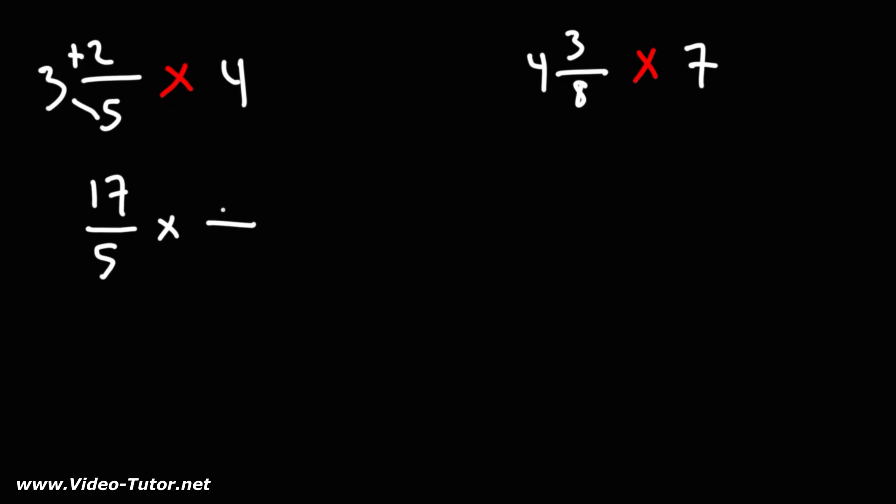Now the whole number, 4, we're going to write that as 4 over 1. We need to write that as a fraction. So now we're multiplying two fractions, so we need to multiply across.